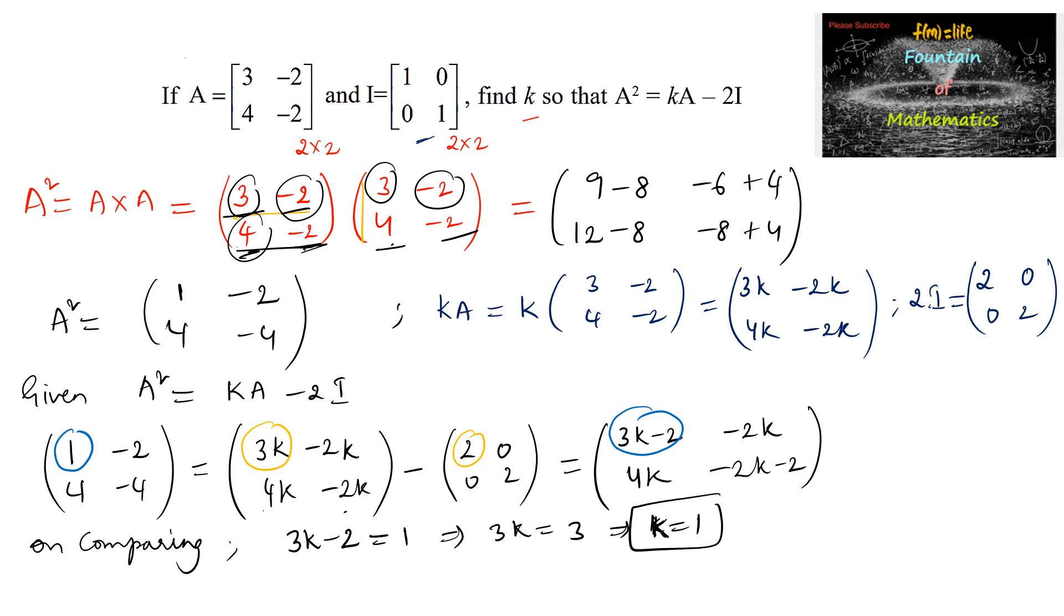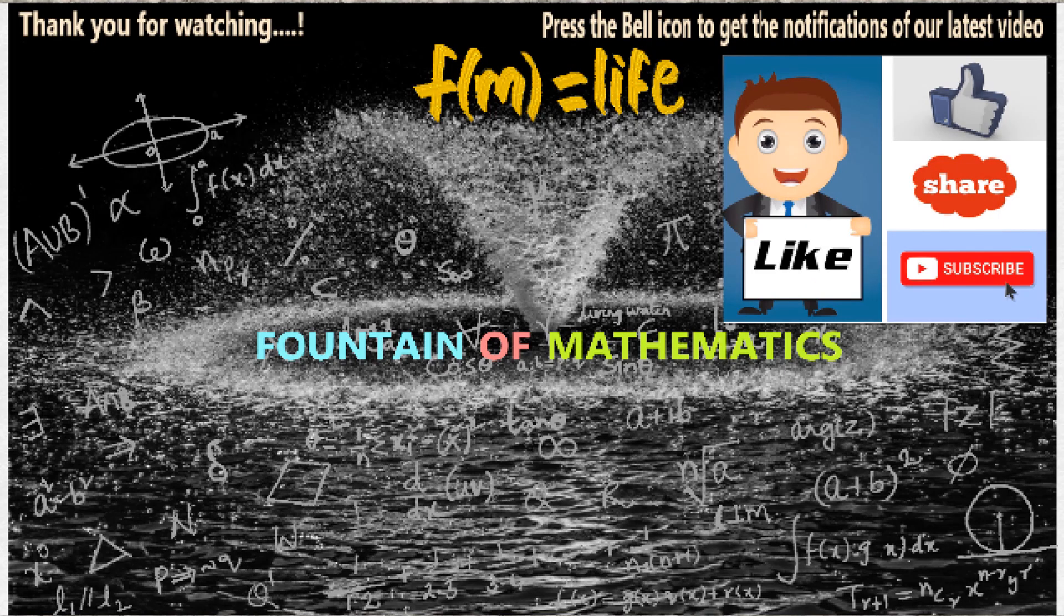Let us cross-verify whether K is equal to 1 satisfies the other equations. Since we have minus 2 is equal to minus 2K, so minus 2 into 1 is minus 2, it is correct. And here 4 into 1 is 4, it is correct. And minus 2K minus 2, so we can say minus 2 minus 2 is negative 4, it is also correct. So we can conclude that hence K is equal to 1. Okay, thank you.